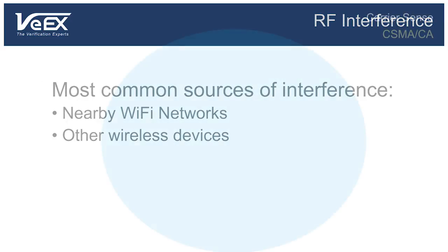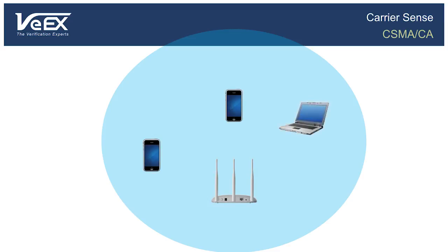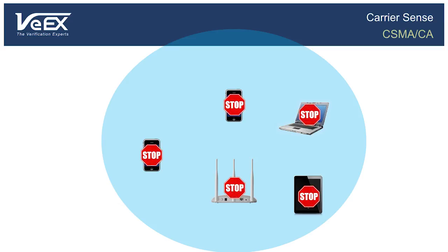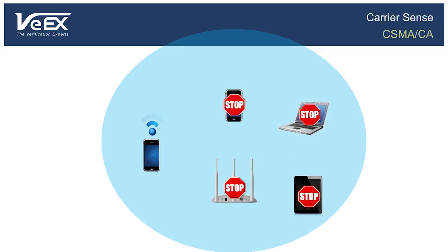The most important thing to remember is that the Wi-Fi RF channel is a shared medium, which means that all devices connected on the same channel as your access point will be sharing the same bandwidth. Each device only transmits packets of data when no other device is transmitting. To achieve this, there's a built-in Wi-Fi detection mechanism called Carrier Sense Multiple Access with Collision Avoidance, or CSMA-CA for short.